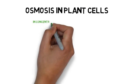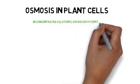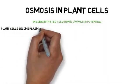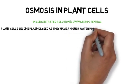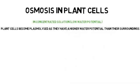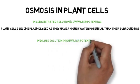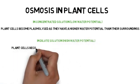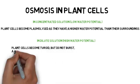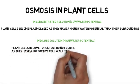Osmosis in plant cells. In concentrated solution, lower water potential, plant cells become plasmolyzed as they have a higher water potential than their surroundings. In dilute solution, high water potential, plant cells become turgid but do not burst as they have a supportive cell wall that is tougher than their cell membrane.